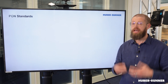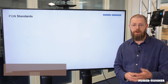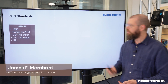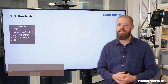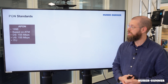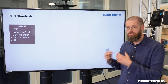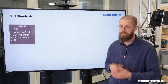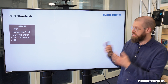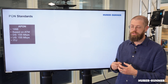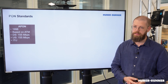Spoiler alert: they're all different PON standards. The first standardized PON was the so-called APON, back in 1998. It was based on the Asynchronous Transfer Mode, which is why it was called APON — as in asynchronous. In this case, both the downstream and upstream were 155 Mbits per second.